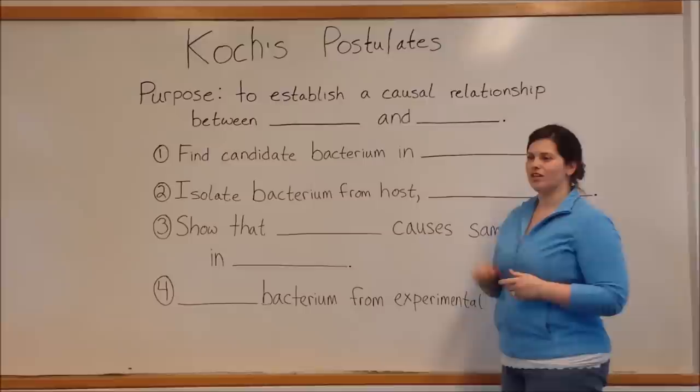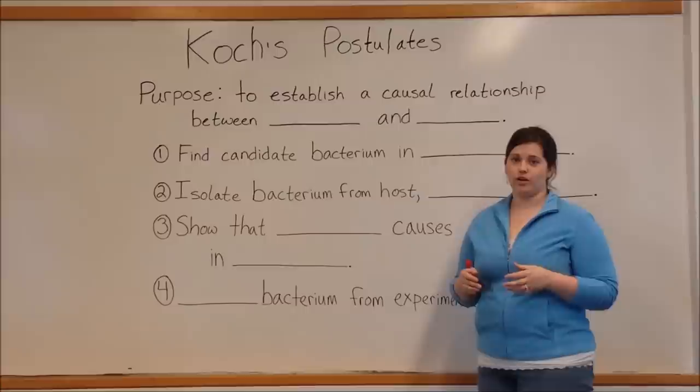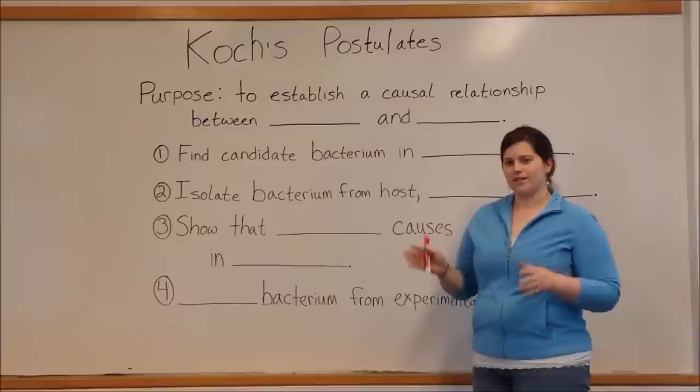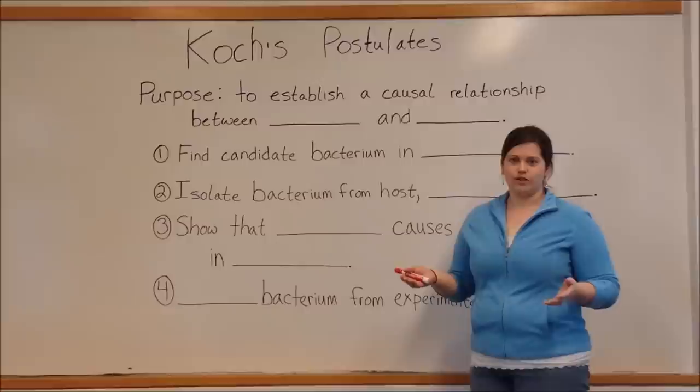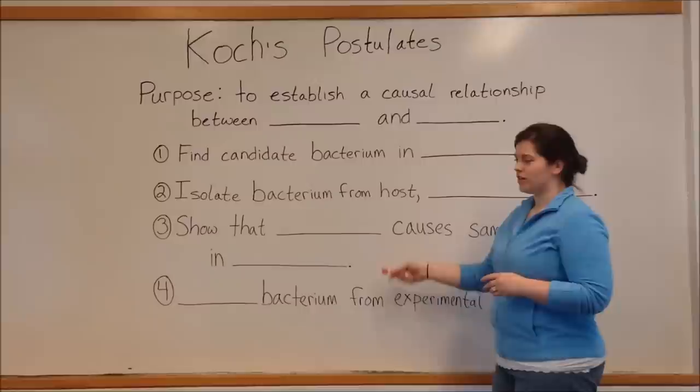Hi everyone, and welcome to Biology Professor. Today we're talking about Koch's postulates. These are a set of four criteria established by a guy named Robert Koch. There's a little bit of confusion regarding how his last name is pronounced — some people say Cook, some say Koch, some say Koch — so depending on your teacher, you might hear it pronounced differently. I'm going to call them Koch's postulates.